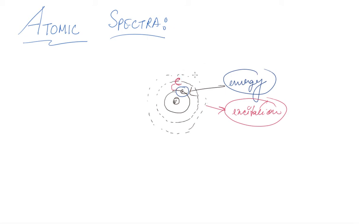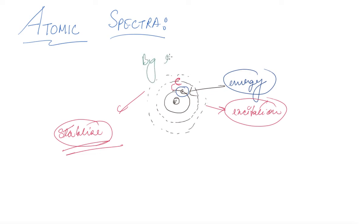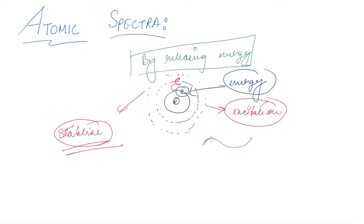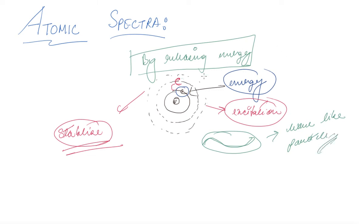After the energy is removed, the electron will try to stabilize itself by releasing energy. With the release of energy, it releases a certain wavelength — a wave-like particle. This gives a definite spectrum because of its excitation.